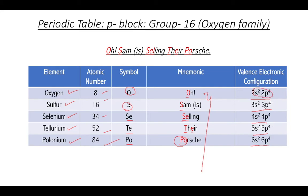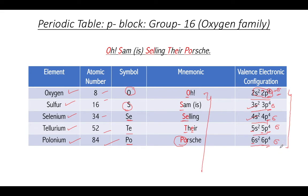The valence shells are: second for oxygen, third for sulfur, fourth for selenium, fifth for tellurium, and sixth for polonium. Since p can accommodate a maximum of six electrons and the last electron of each element enters the p subshell, they are all p-block elements. With 2 + 4 = 6 valence electrons, all Group 16 elements have six valence electrons, giving them similar physical and chemical properties.